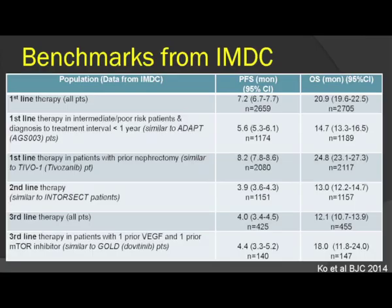We can now identify specific benchmarks for different patient populations. These IMDC prognostic factors can be used in the first line, second line, and non-clear cell carcinomas. For example, progression-free survivals can be identified for intermediate and poor risk groups with a diagnosis-to-treatment interval less than one year, similar to ADAPT inclusion criteria — which was actually used in sample size calculations. The PFS and OS in clinical trials such as Tivo-1, Intersect, and GOLD are fairly similar to already-reported trials.